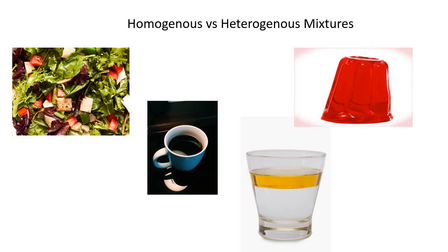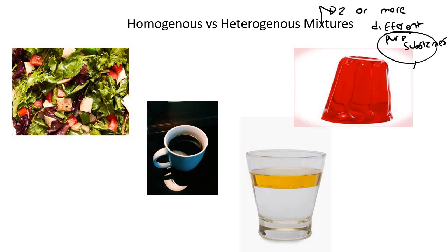In this lesson, we're going to be talking about the different types of mixtures that we get. You get two types: homogeneous and heterogeneous mixtures. Remember what mixtures are — that is when you have two or more different pure substances. And pure substances, remember, were things like elements and compounds.